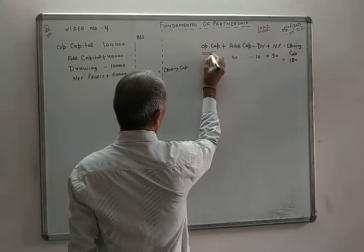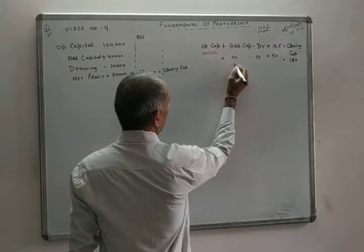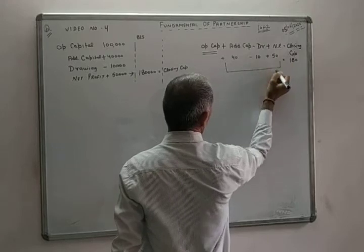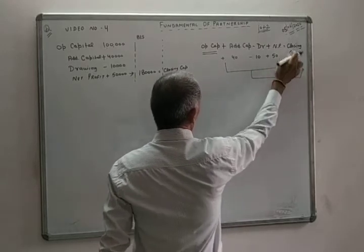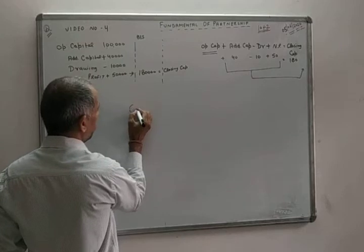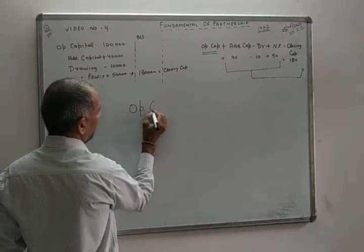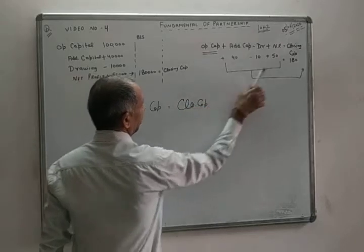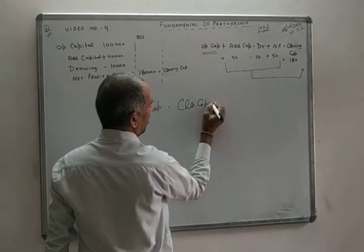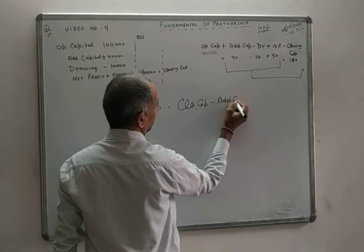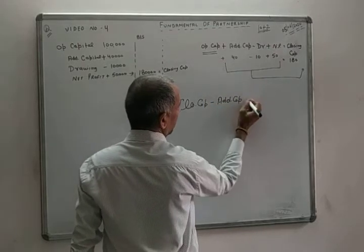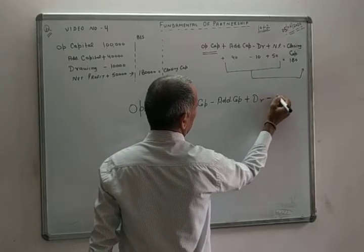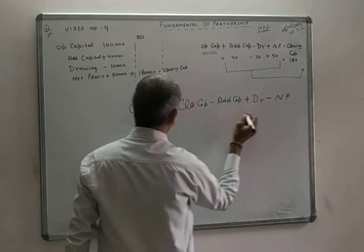If you want to find opening capital, you rearrange: Opening capital = Closing capital − Additional capital + Drawing − Net profit. So closing capital is given, minus additional capital, minus net profit, plus drawing gives us the opening capital.